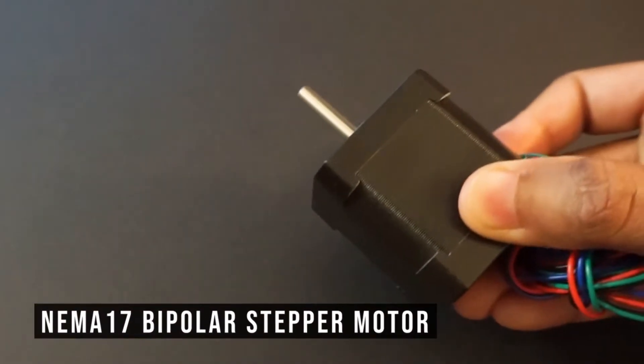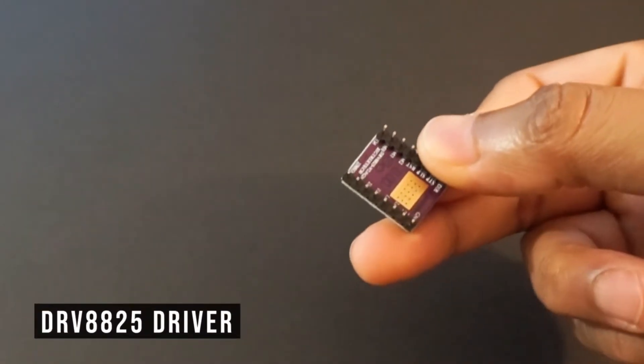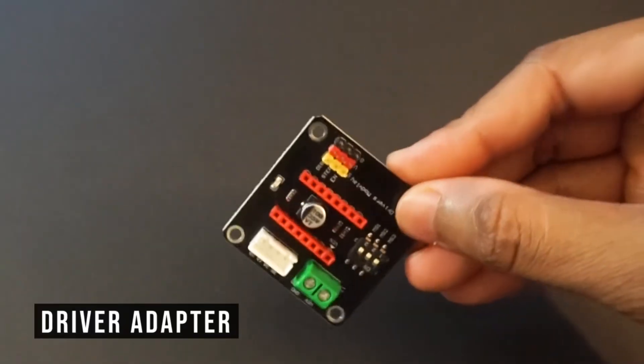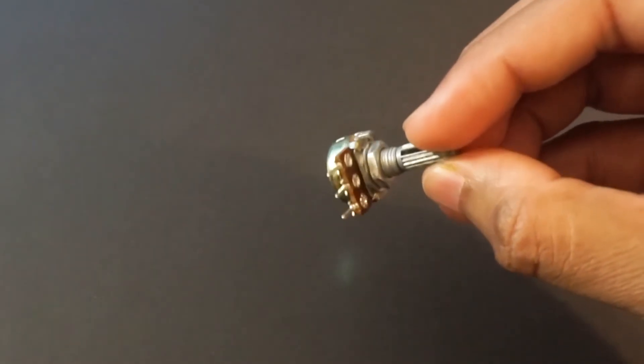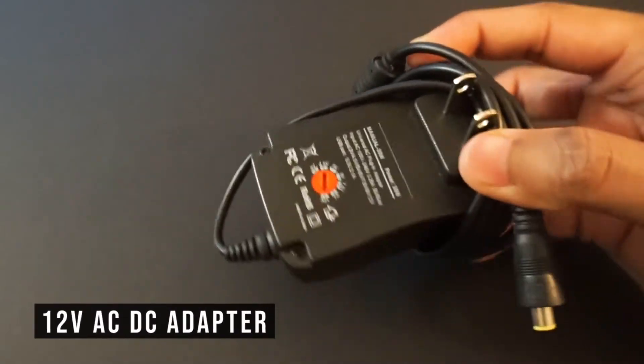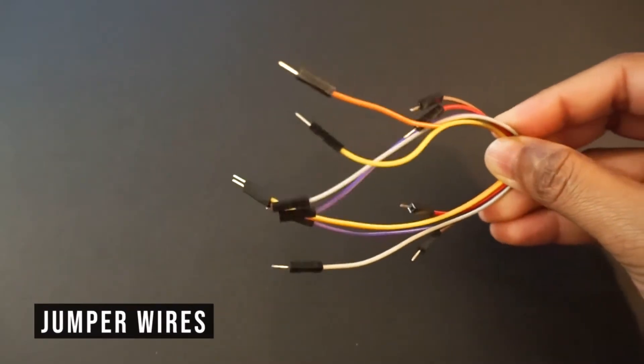Now we will be using following components: Arduino Uno, NEMA 17 bipolar two-phase stepper motor, DRV8825 driver, driver adapter, potentiometer, breadboard, 12 volt AC-DC adapter (it should provide minimum 3 ampere current), and a few jumper wires.